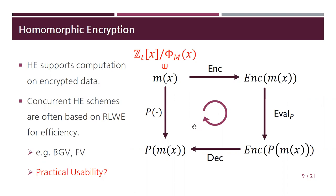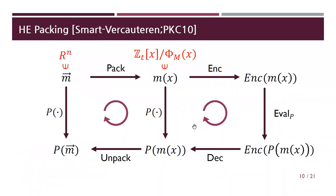Being ring-LWE based means the plaintext is now a polynomial ring and the scheme supports additions and multiplications of this polynomial ring. Ring-LWE enhances efficiency, but what about practical usability? This polynomial ring structure does not seem to reflect practical reality — who would want to compute on a polynomial ring for real-life applications? The great idea of Smart and Vercauteren was essentially to use polynomial packing for a more friendly structure, attaching this packing method in front of the HE scheme to use it with regard to a more friendly structure R.